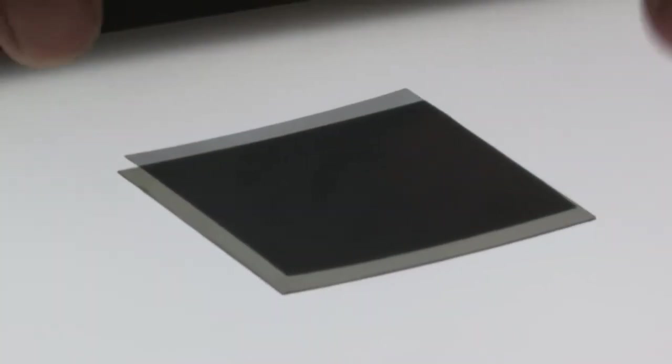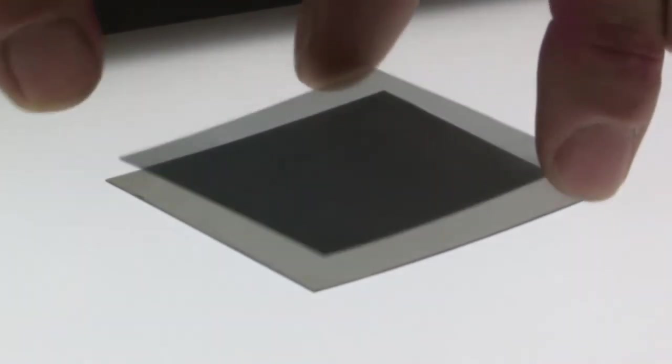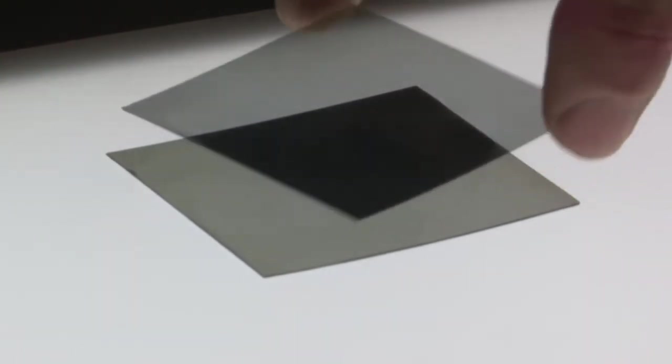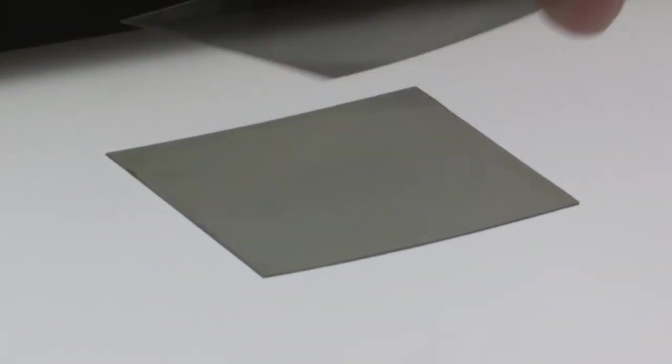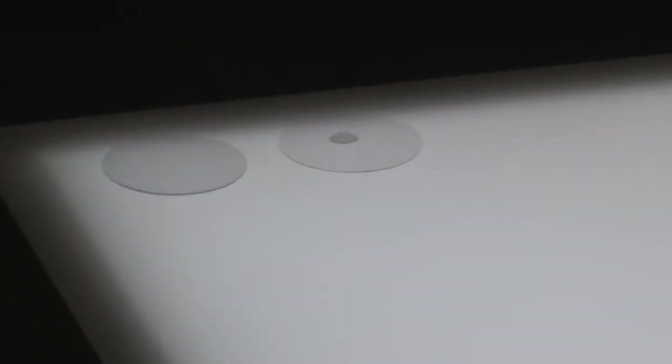So here we have the polarizing filters, and as you can see, they're oriented so that we don't get any light through. Turn it that way, the light comes through again, that way dark again. Now, I'm going to take a little bit of the liquid crystal molecule, put it on a drop on this disc here, and sandwich it between that one.